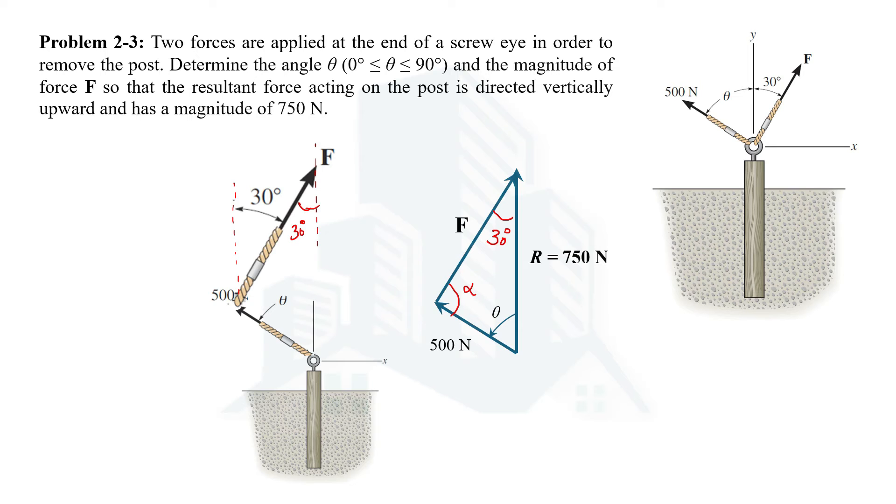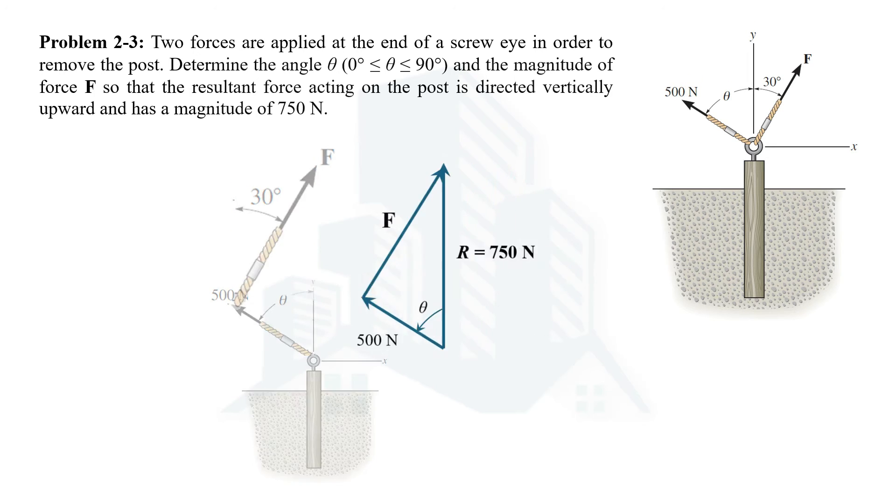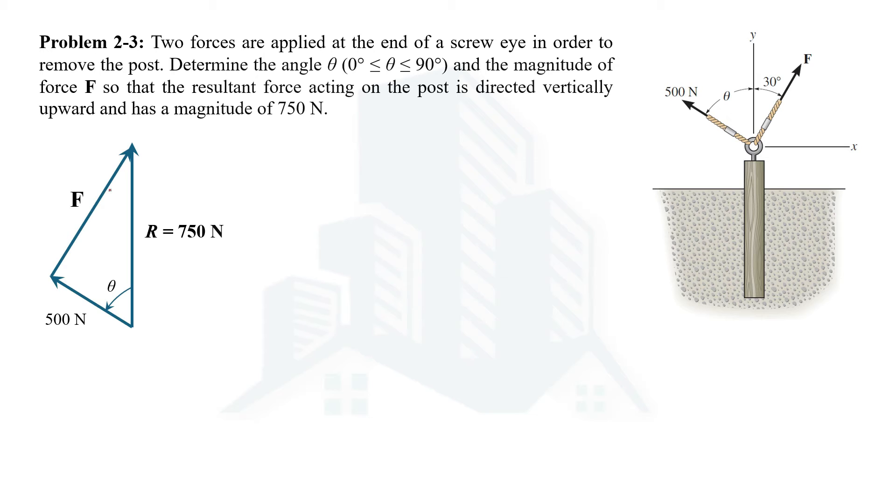Now let's move on and apply the sine law to determine the required parameters. This is the triangle that we have got where this angle is 30 and this angle is alpha. First of all we can determine this alpha angle using the sine law. We know that sine of any angle, sine alpha, divided by the magnitude of the opposite side, and the opposite side in this case is 750.